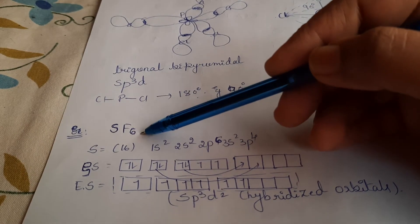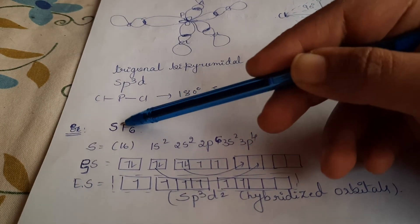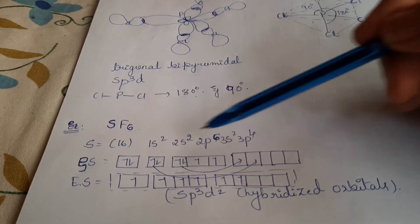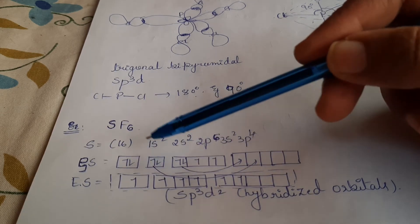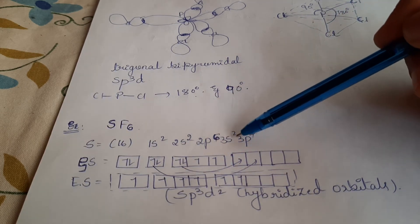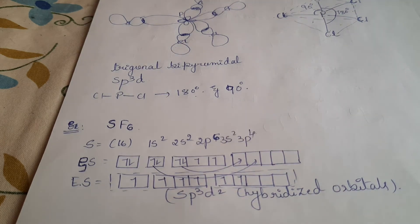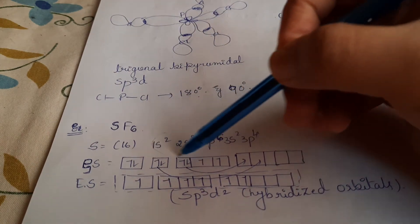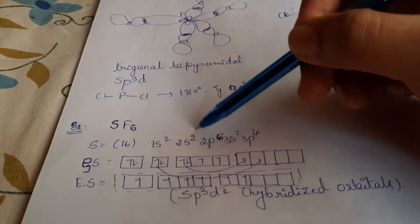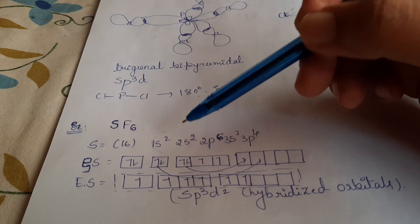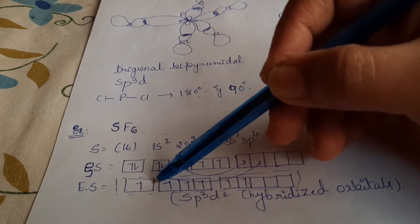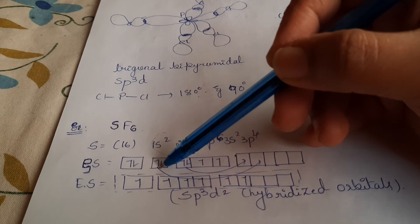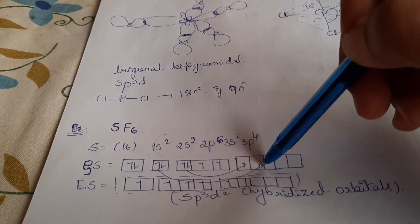Coming to the next example: SF₆, sulfur hexafluoride. Sulfur with atomic number 16 has 3s2 and 3p4 valence electrons. In the ground state, the electrons are arranged with 3s2 and 3p4. The 1s2 and 2s2 electrons are ignored as they do not participate in bonding. The 3s2 electron is going to shift to the D orbital during excitation.